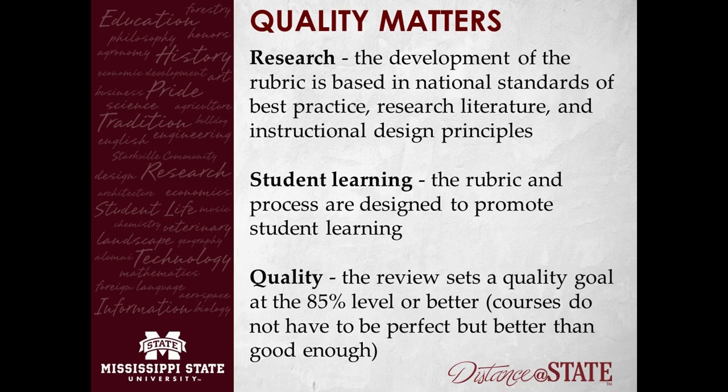Student learning: everything in that rubric is centered on one thing, and that's the student — how effective and efficient the learning process is for the student. That's our end goal here at Mississippi State. We talk a lot about everything we do in our courses, but the end result is that student being successful. The review sets a quality goal of 85%. The idea is we're never going to reach perfection, but we're going to try to make it as excellent a product as it can get — it's better than just being good enough.